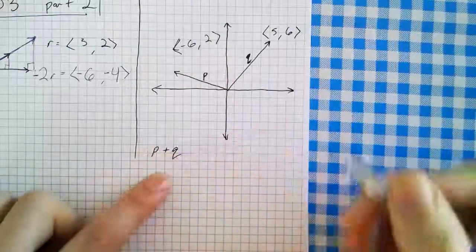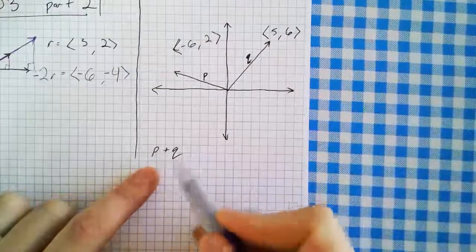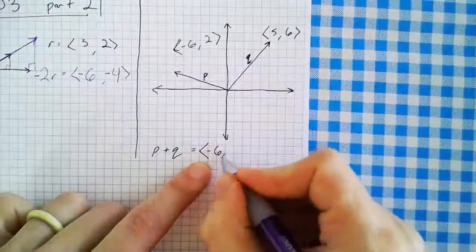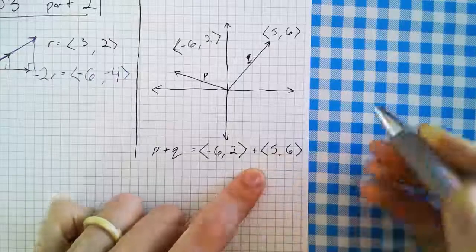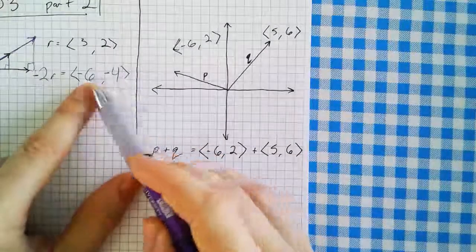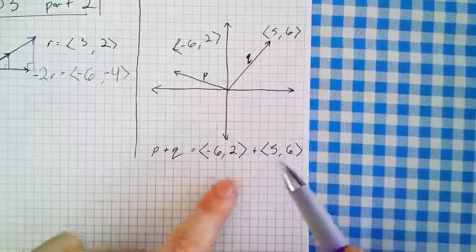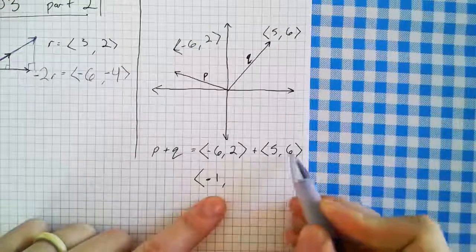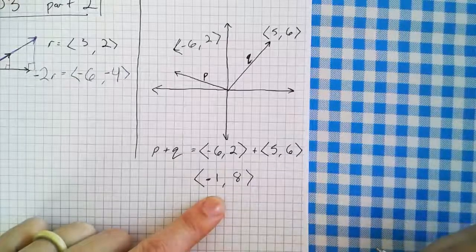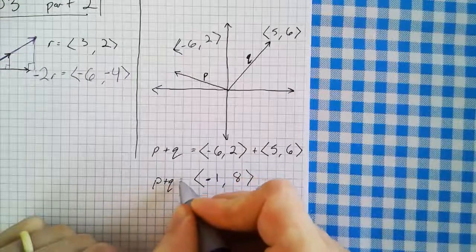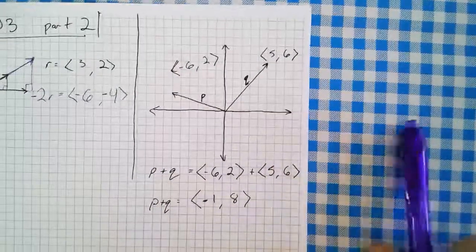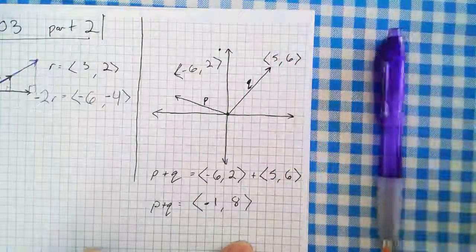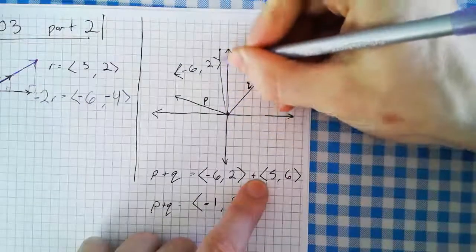What happens if I add vectors p plus q? I get a new vector. This is the same as p in component form (-6, 2) plus q in component form (5, 6). Just like multiplying a vector, we add the components individually. So I add the x values: negative 6 plus 5 equals negative 1, and I add the y values: 2 plus 6 equals 8. My new vector p plus q is (-1, 8).